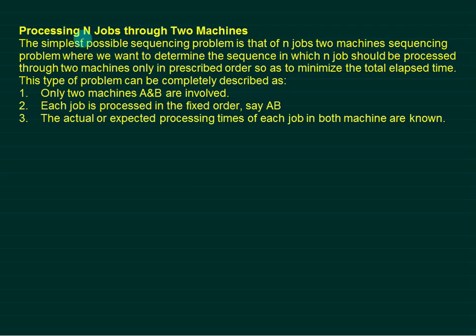In this video we are going to cover the processing of n jobs through two machines, A and B. The simplest possible sequencing problem is n jobs on two machines. We want to determine the sequence in which the n jobs should be processed through the two machines in a prescribed order, so as to minimize the total elapsed time — the lowest possible time to complete the job.